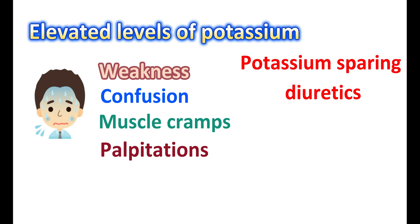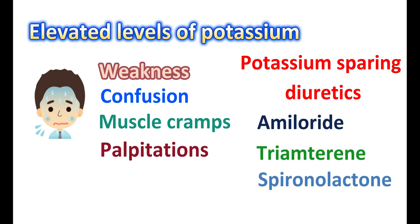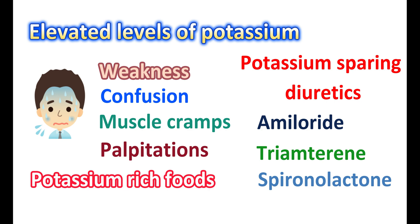Hyperkalemia can be more pronounced when ACE inhibitors are combined with other medications that increase potassium levels. Particularly, potassium-sparing diuretics like amiloride, triamterene, and spironolactone may also increase hyperkalemia. Taking potassium supplements along with ACE inhibitors, or eating potassium-rich foods such as dry fruits, leafy vegetables, sweet potatoes, and carrots, can also increase the risk. Therefore, while using ACE inhibitors for longer periods, particularly at higher doses, try to avoid high consumption of potassium-rich foods.